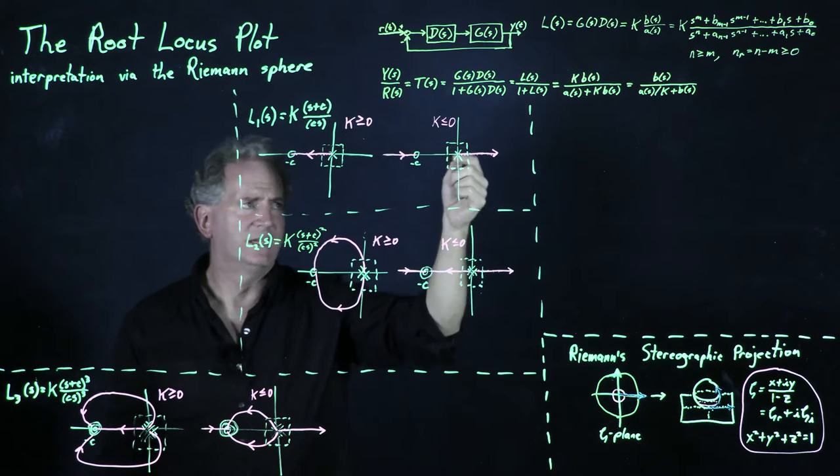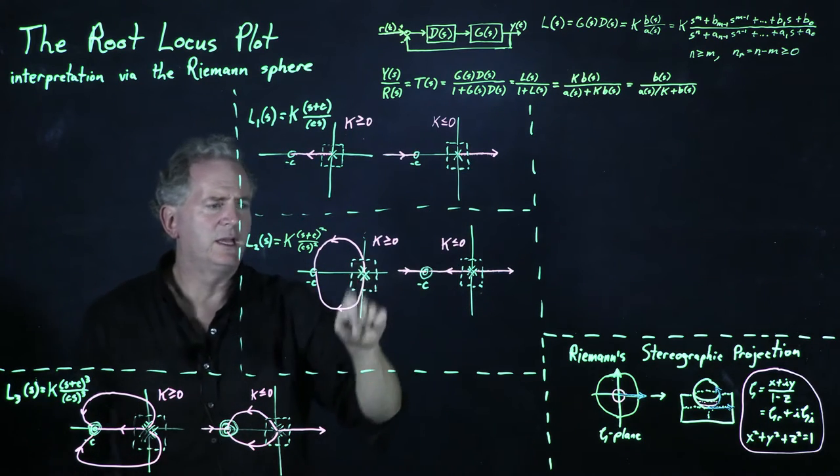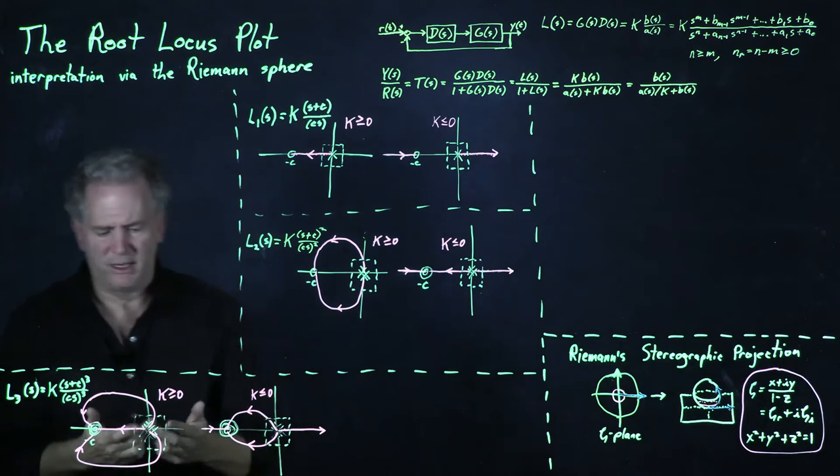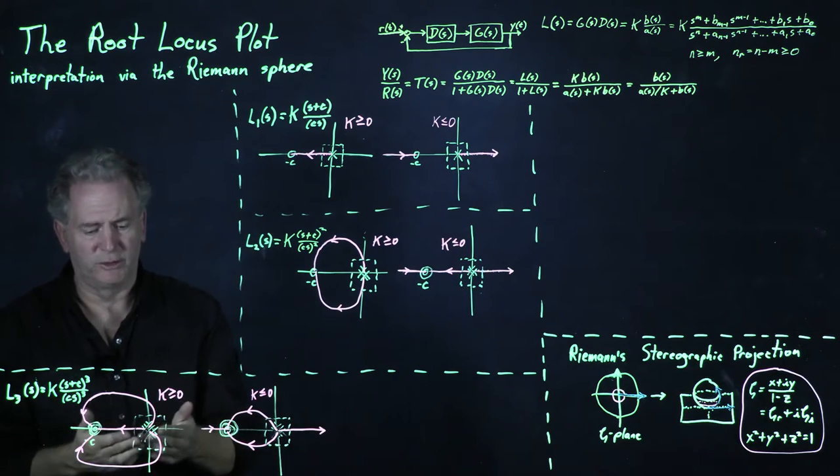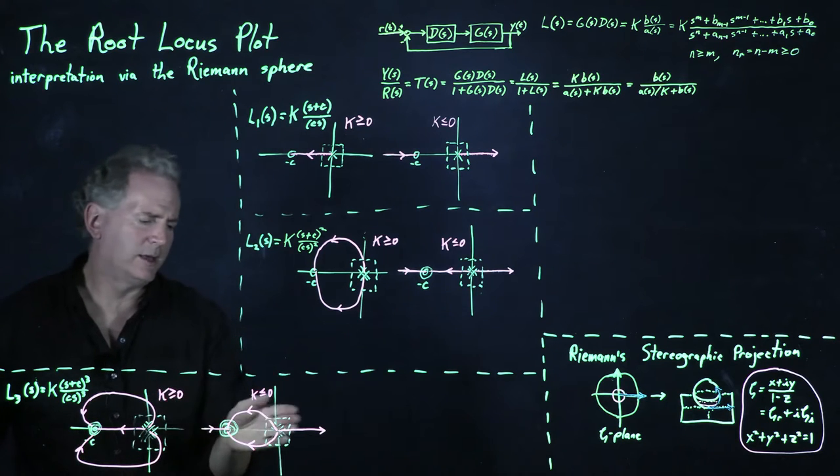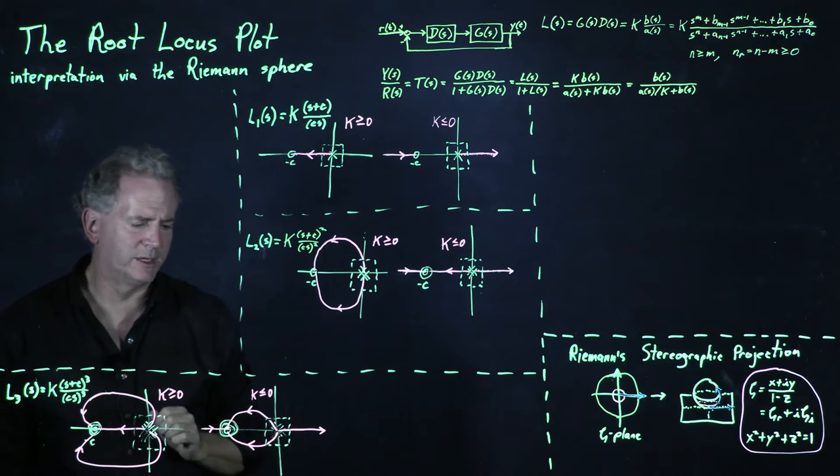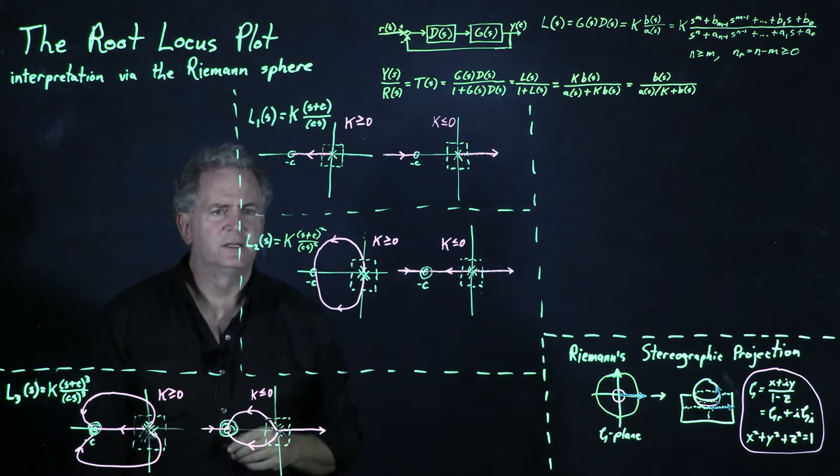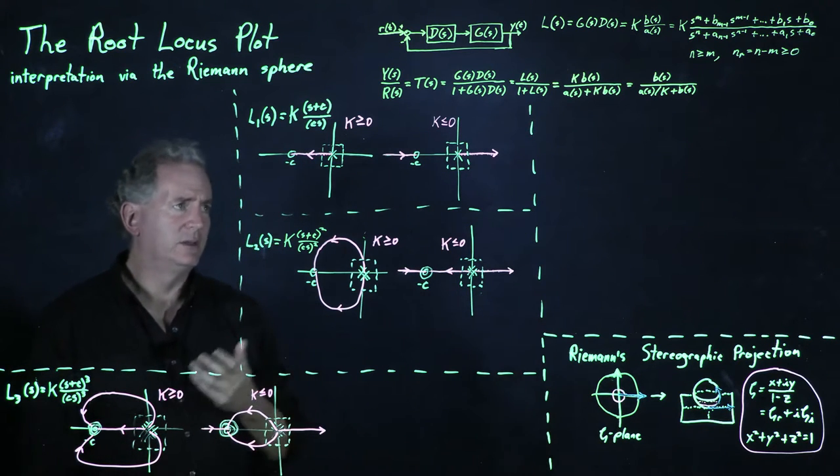In this case, we have a single branch of the locus going off to the right. Here we have two of them, one going up and one going down. Here we have two of them going to the left and the right. And here we have three going off at 120 degree angles with one pattern. And here we have three going off with 120 degree angles with the opposite pattern. And so that seemed logical.